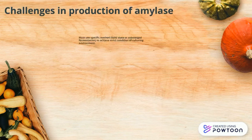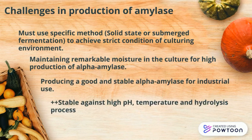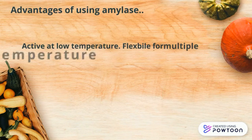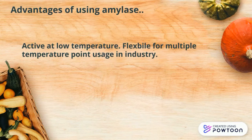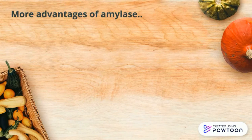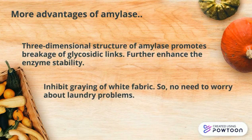Amylase production must use specific methods to achieve good moisture in the culture and produce high-quality, high-yield alpha-amylase that is stable against pH, temperature, and hydrolysis products. Advantages of amylase in the detergent industry: it is active at low temperatures, reducing energy consumption and making the process more cost-effective. Amylase has oxidative stability, which is advantageous in the oxidizing machine environment. Its three-dimensional structure promotes the cleavage of glycosidic bonds in starch. Lastly, amylase in detergent can inhibit the graying of white fabric resulting from a combination of starch and particulate soils.